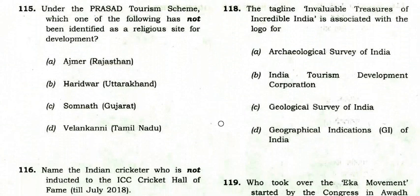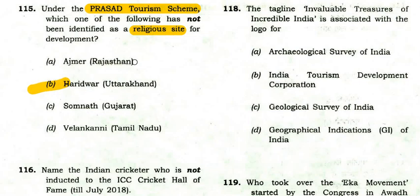Under the PRASHAD Tourism Scheme, which has not been identified as a religious site for development? The answer is Haridwar — Ajmer, Somnath, and Vailankanni have been identified, but Haridwar in Uttarakhand is not identified as a religious site under the PRASHAD Tourism Scheme.